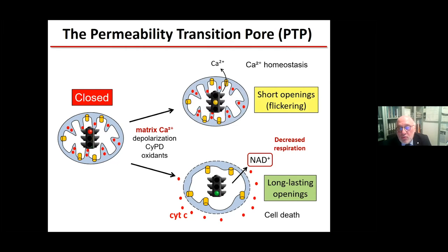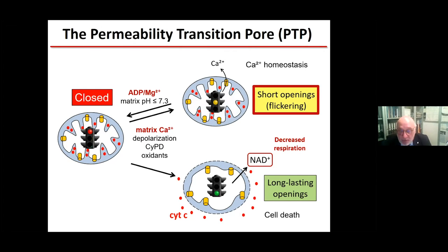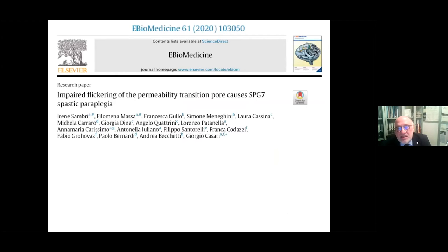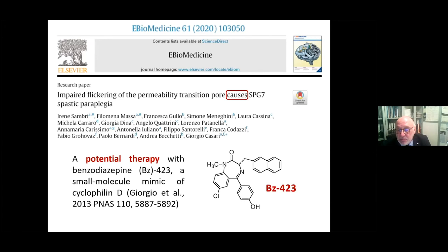We also discussed short openings — flickering — that might be involved in calcium homeostasis; that hypothesis was put forward around 1996. The basis for flickering is prevailing factors that close the pore, like ADP and magnesium. This is important: impaired flickering can cause genetic disease, as shown in spastic paraplegia, just published in eBioMedicine, the biomedical journal of The Lancet, from Giorgio Casari's group. We also have a potential therapy with a benzodiazepine that increases pore open time, mimicking cyclophilin D. This is the first disease of impaired flickering.